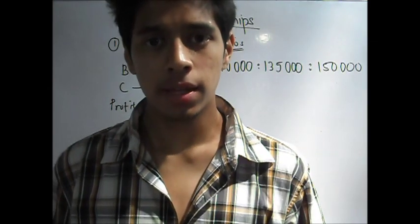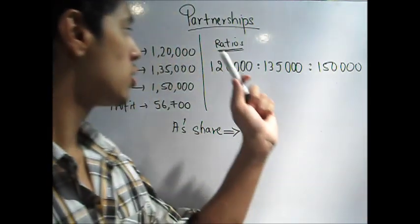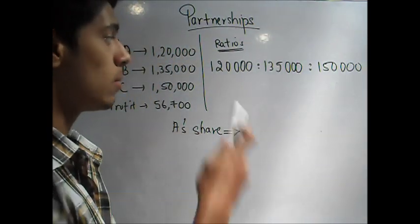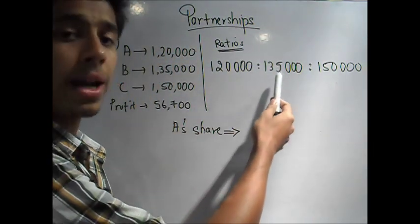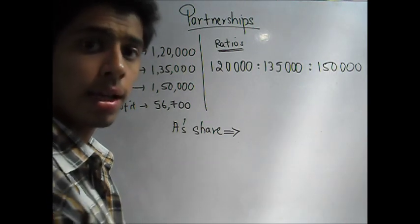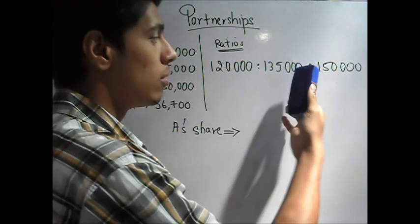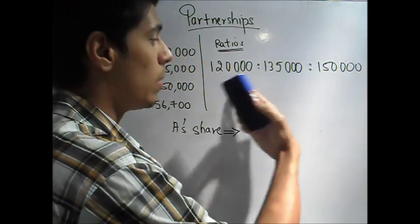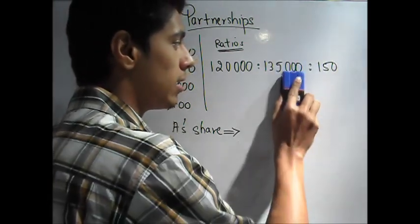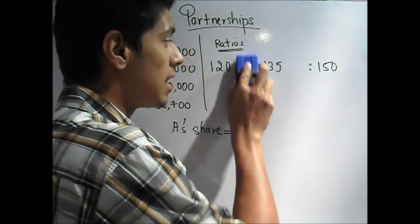The first step in the problem is to make your ratios. The ratio of investments. A has invested 1,20,000, B has invested 1,35,000 and C has invested 1,50,000. In solving the ratios, one simple trick is to find a common. You know that there are three zeros here, 1,000. So, remove them out completely. This will help you simplify your ratio.